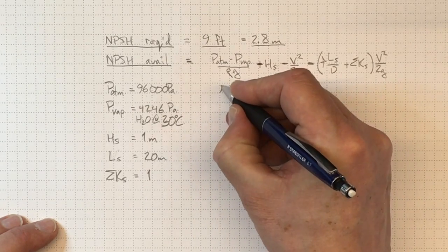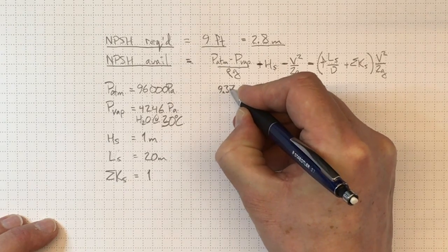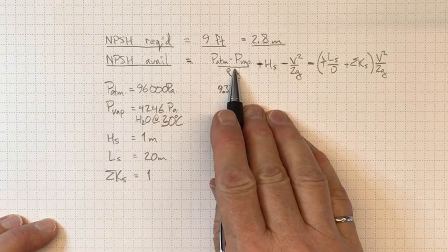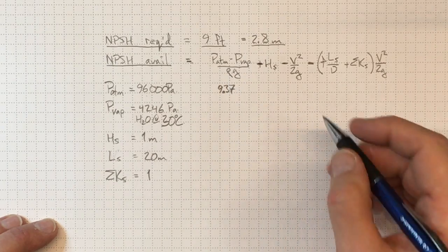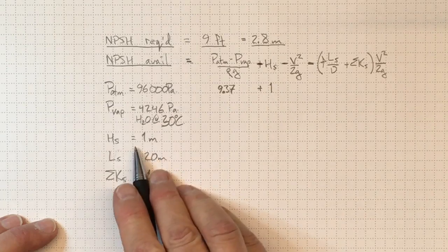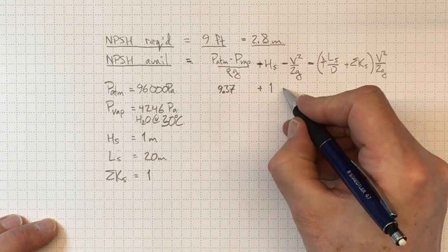Gives us a value of about 9.37 meters of NPSH available with just the pressure taken into account.